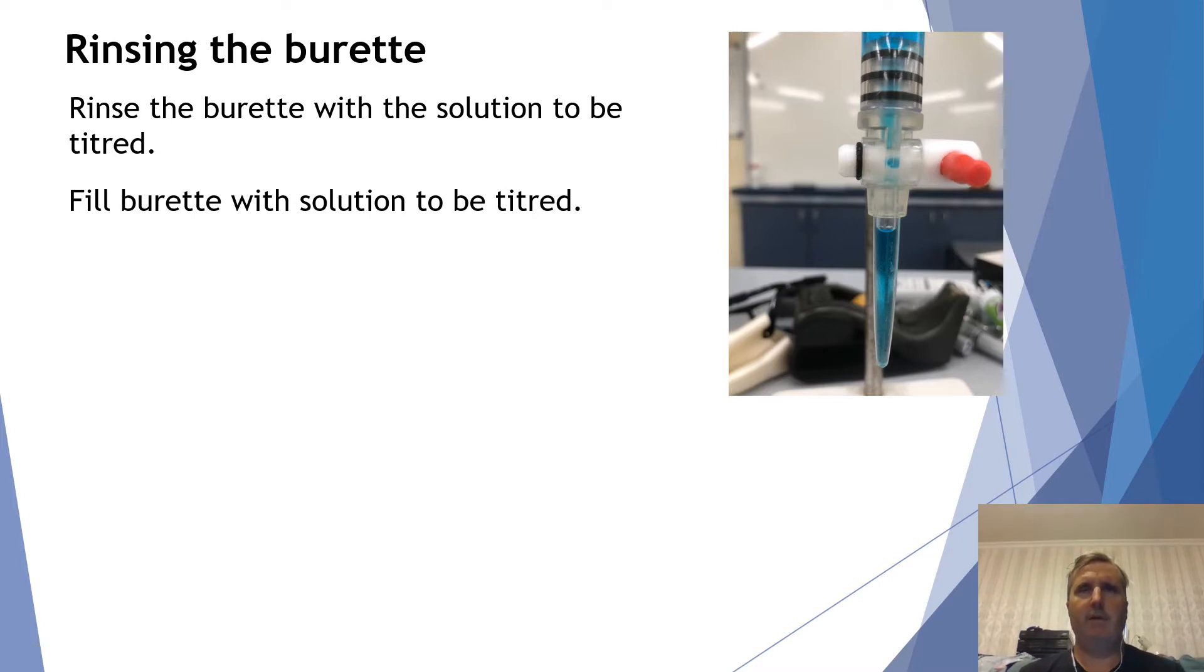So usually that entails us filling it about a third full. We take it off the clamp stand, we hold it horizontally and we swirl it around in the same technique that we looked at with the pipette. Once we've done that, we place the burette back in the stand and we fill it with the solution that we're going to titrate.